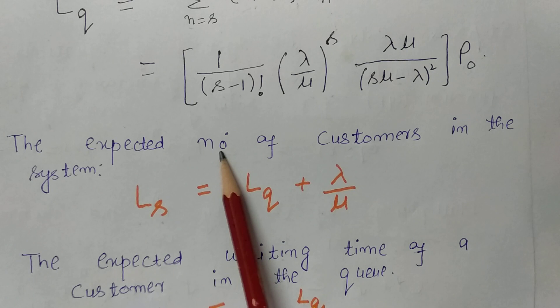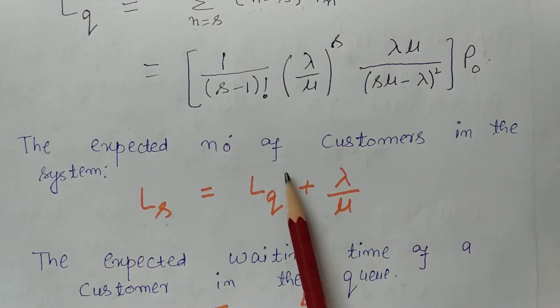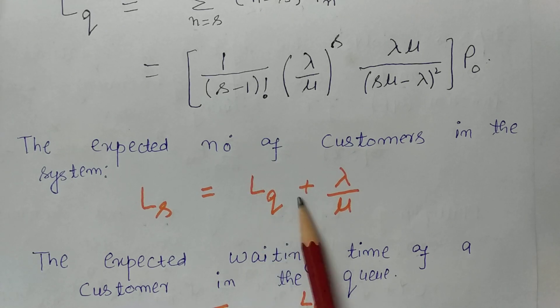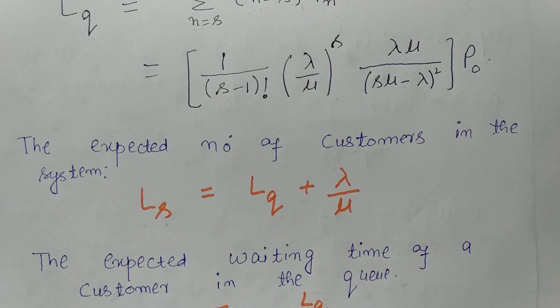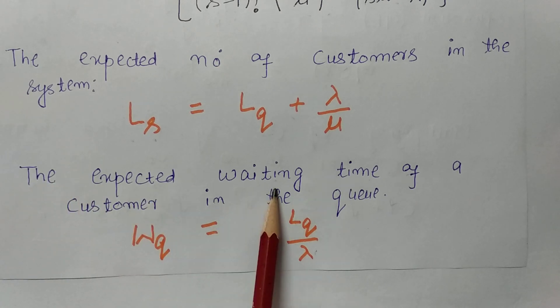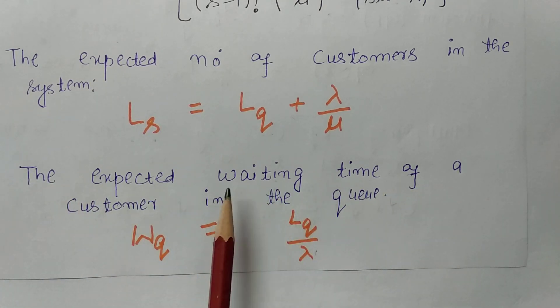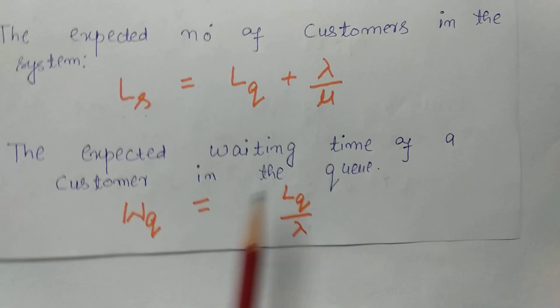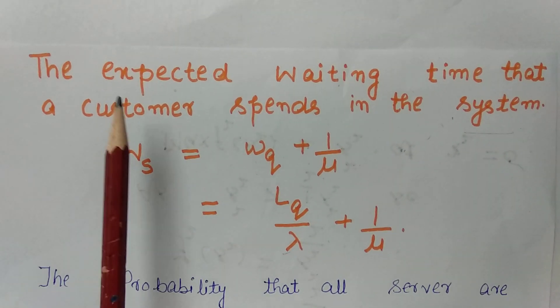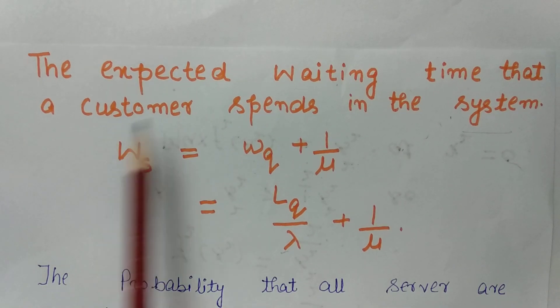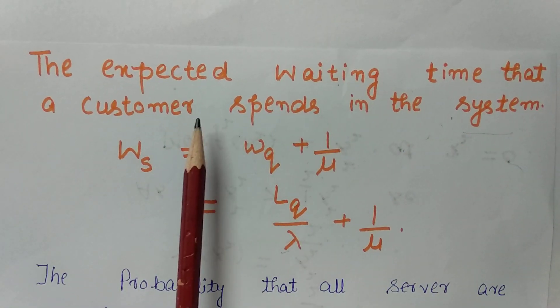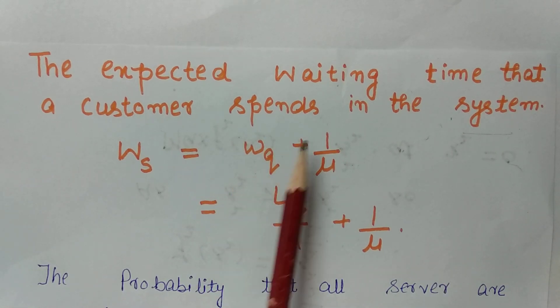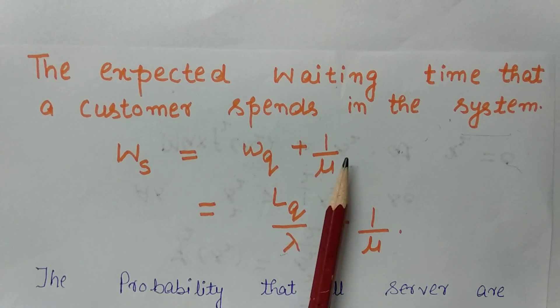The expected number of customers in the system L equals Lq plus λ/μ, where λ is the arrival rate and μ is the service rate. The expected waiting time in the queue Wq equals Lq divided by λ. The expected waiting time a customer spends in the system W equals Wq plus 1/μ, where 1/μ is the service time.